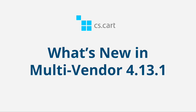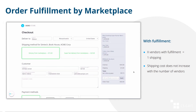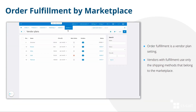The first and most important change is Order Fulfillment by Marketplace. Previously, if customers ordered products from different vendors, they had to choose and pay for shipping for each vendor separately. Starting from version 4.13.1 in Multi-Vendor Ultimate, the Marketplace can take care of shipping for vendors. All the shipping costs will go to the Marketplace account, and customers will only have to choose one shipping method and pay for it. This functionality is part of an add-on called Order Fulfillment by Marketplace.